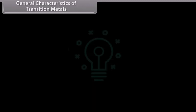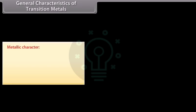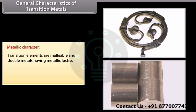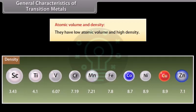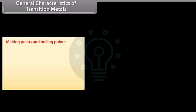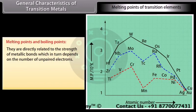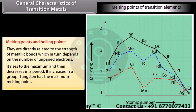Transition elements are malleable and ductile metals having metallic luster. These are good conductors of heat and electricity. Except mercury, all are solids. They have low atomic volume and high density. Melting points and boiling points are directly related to the strength of metallic bonds, which in turn depend on the number of unpaired electrons. Melting point rises to a maximum and then decreases in a period, and increases in a group. Tungsten has the maximum melting point; its partially filled d-orbitals form additional covalent bonding due to d-d overlapping of adjacent atoms.